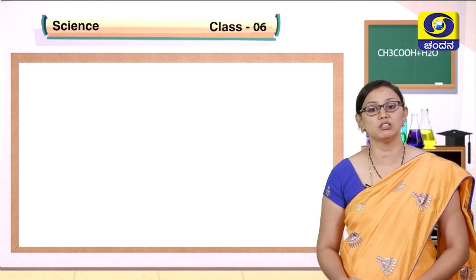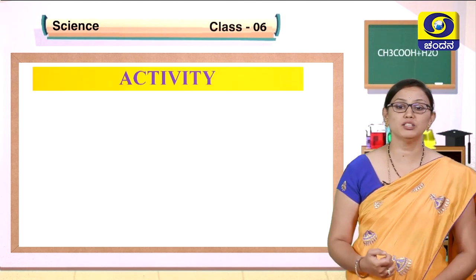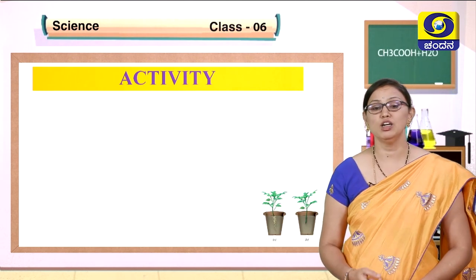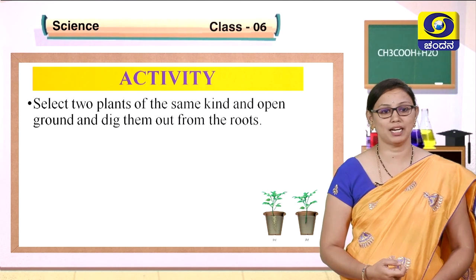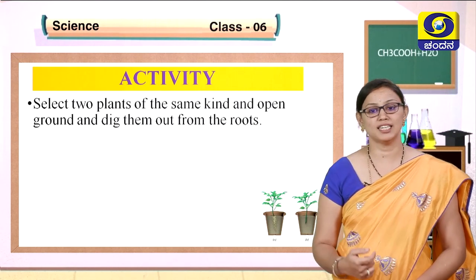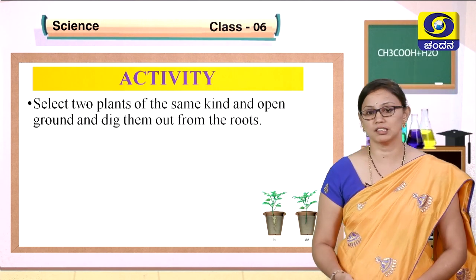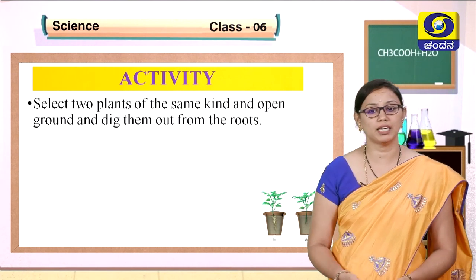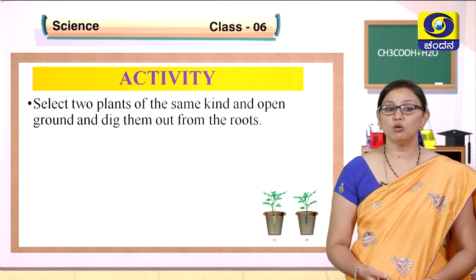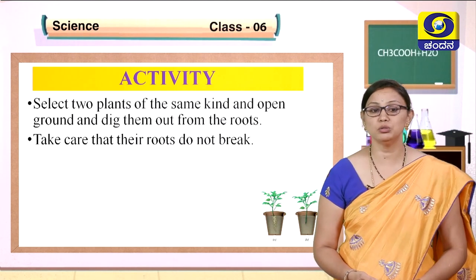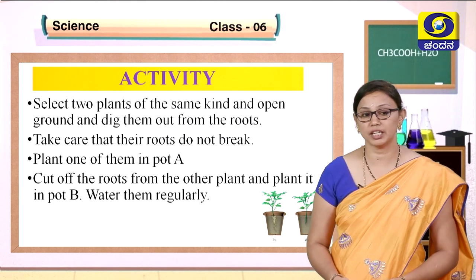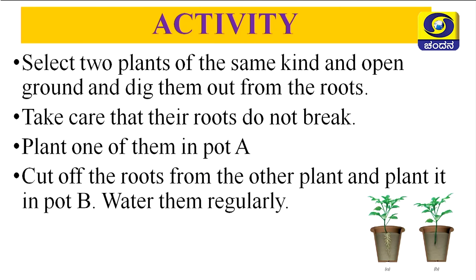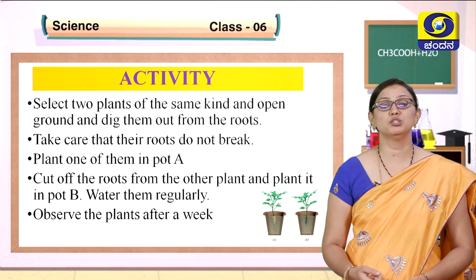To understand the importance of roots, let us do an activity. You need two plants of the same kind — for example, two hibiscus plants or rose plants. Dig them from the roots without breaking the roots. Plant one in pot A with roots intact, and cut off the root from the other plant and plant it in pot B. Water them regularly.